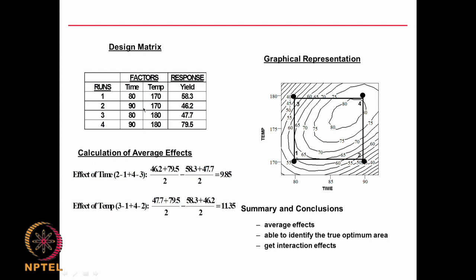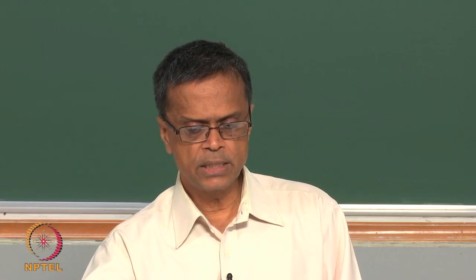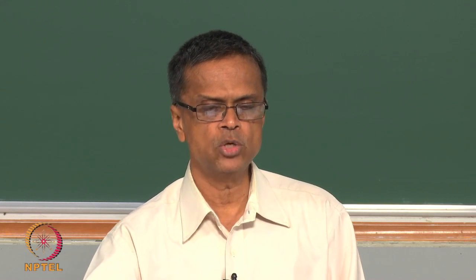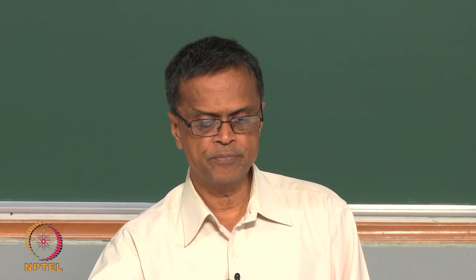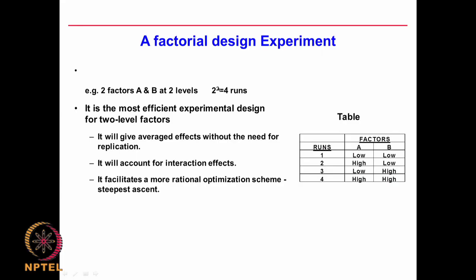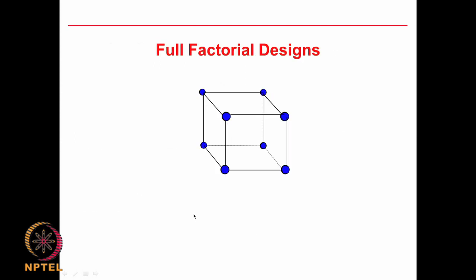That means increasing temperature by 10 degrees increases yield by 11.35, and increasing time from 80 to 90 increases yield by 9.85. This is extremely powerful — we can analyze results to get the effect of main parameters and even the effect of interactions, which I will discuss later. This is a 2^2 design: the base 2 indicates the levels and the exponent 2 indicates the number of factors. We will spend more time on different types of designs, including full factorial designs. Thank you very much for your time.